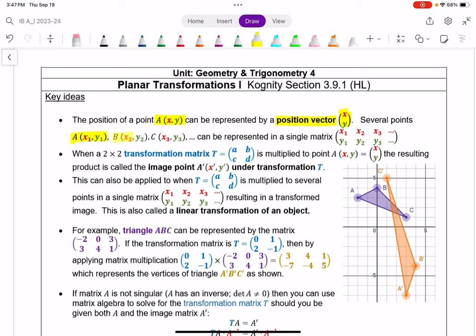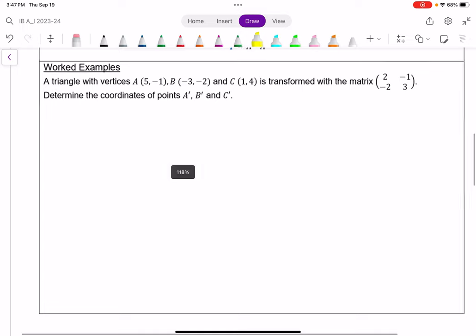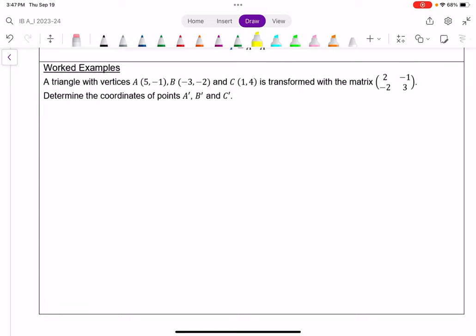And if we have multiple points, let's say vertices of some shape, we can express that all together in a single matrix. Again, x in the top first row, y in the second row. And eventually we can apply these ideas beyond two dimensions. So let's stick with two dimensions and let's look at this.